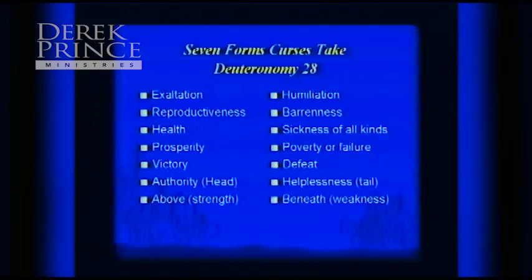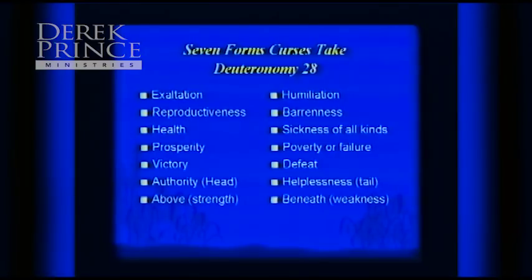In Deuteronomy 28, we'll highlight key parts. Derek Prince has synopsized the positive and negative sides — the blessing and the curse — with seven words each. When a person is under a curse, there is humiliation, barrenness, sickness of all kinds — it's like people under a curse seem to invent new ways to get sick. There is poverty or failure continually, defeat, and as the scripture says, 'You shall be the tail and not the head' — what I would call helplessness.